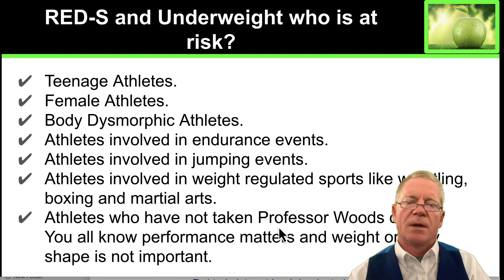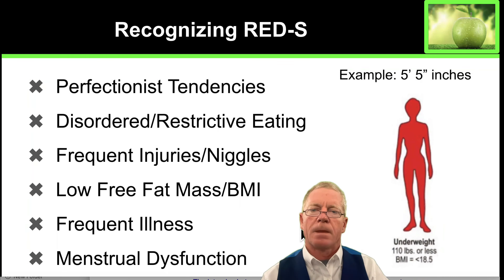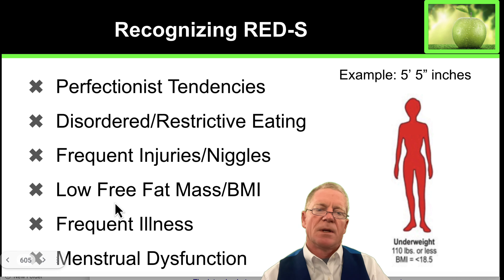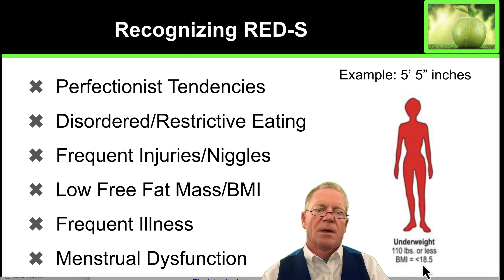Not having enough food and not enough energy in your diet is one of the biggest problems I see in athletes — eat more rather than less. RED-S athletes tend to have perfectionist tendencies, sometimes disordered and restrictive eating, frequent injuries, low fat mass, and low body mass index. When your BMI starts to drop below 18.5, that's a dangerous situation.